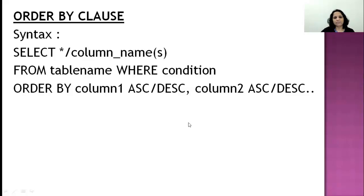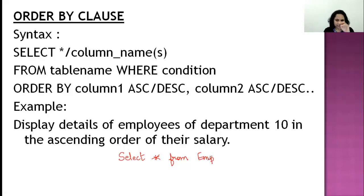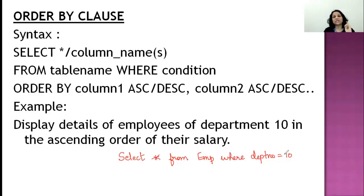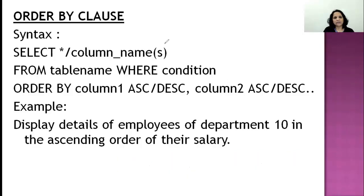Example: display the details of employees of department 10 in ascending order of their salaries. The command is: 'select * from EMP where DEPTNO = 10 order by sal'. There is no need to write ASC because ascending is the default ordering.